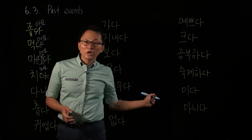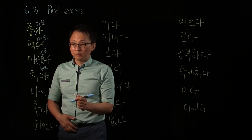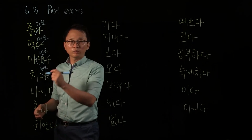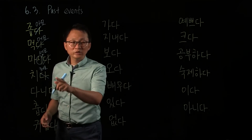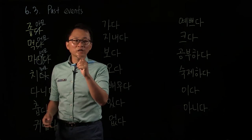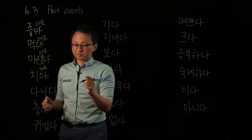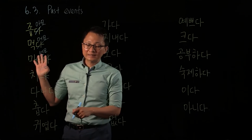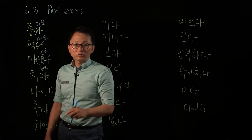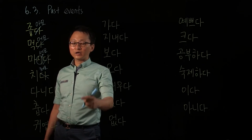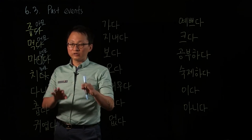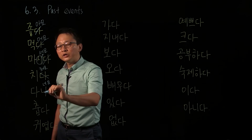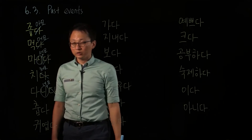What does 치다 mean? The original meaning is to hit. But when you play tennis, 테니스를 쳐요, 그렇죠? It's a sport with hitting balls — tennis, badminton, bowling, golf. We use this 치다 verb: 골프를 쳐요, 테니스를 쳐요. 다니다 means to go to some place regularly, like 학교, to attend. 다녀요. 학교를 다녀요 — to attend.